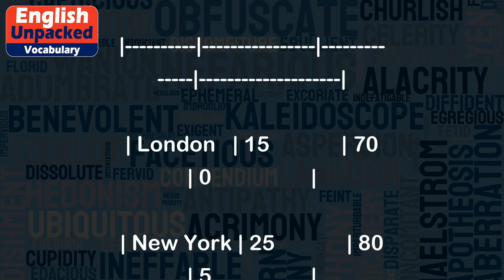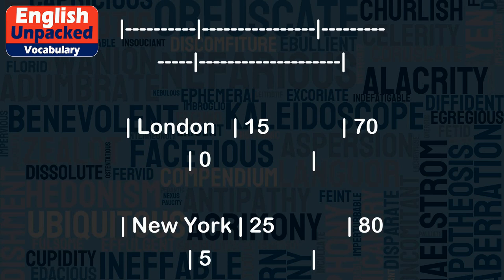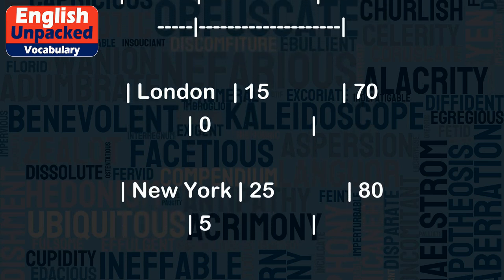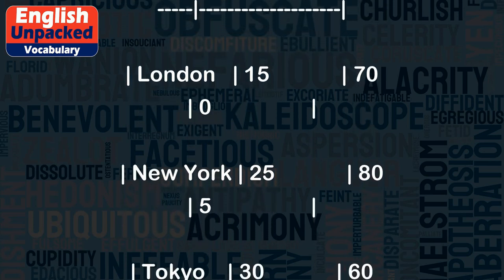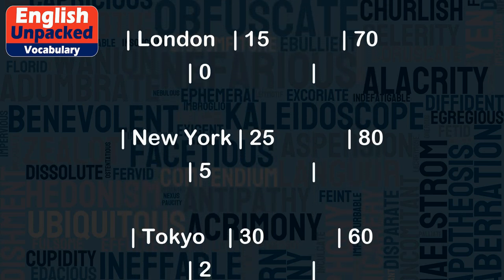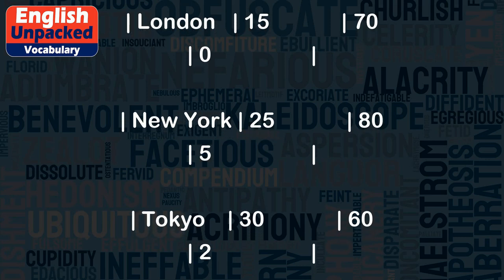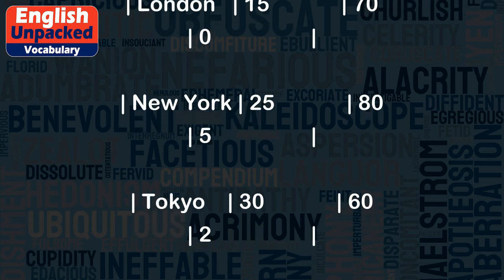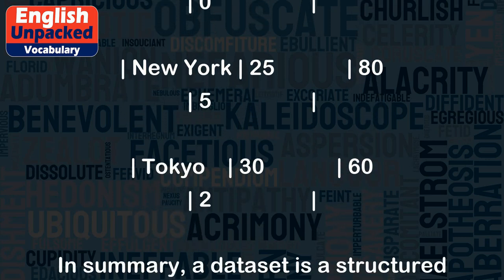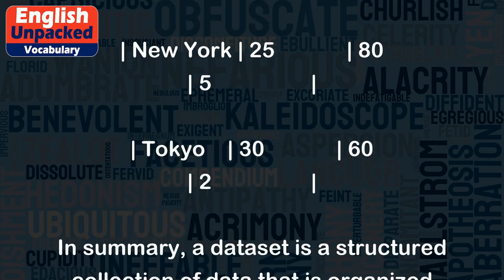Here is an example of how this data set might look: London, 15°C, 70%, 0mm. New York, 25°C, 80%, 5mm. Tokyo, 30°C, 60%, 2mm.